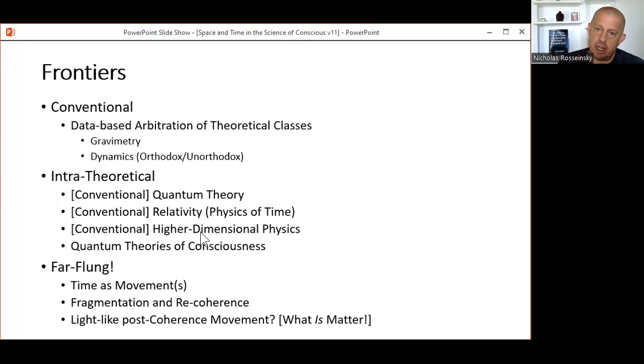Then there's a set of frontiers that could be thought of as internal to an ongoing theoretical journey. For example, further examination of ideas in these presentations in relation to work in conventional quantum theory, conventional relativity, high-dimensional physics including but not limited to string theory and m-theory. And another potentially profitable internal frontier is to put ideas presented here alongside quantum theories of consciousness and see what emerges from that conjunction. Finally, there's a group of far-flung frontiers with perhaps no obvious direct relationship to other scientific fields or subfields, stemming from a conceptualization of time as a movement and then flowering into the idea of fragmentation and recoherence, and then going beyond even that to speculate about light-like movements after recoherence—a speculation that then spins off a further inquiry. Frankly, an inquiry that I hold to be one of the most productive for humankind and simultaneously one of the most neglected: the inquiry into the question of what matter really is.